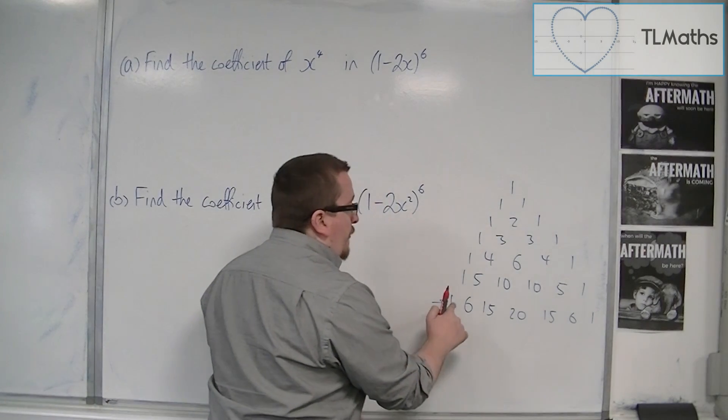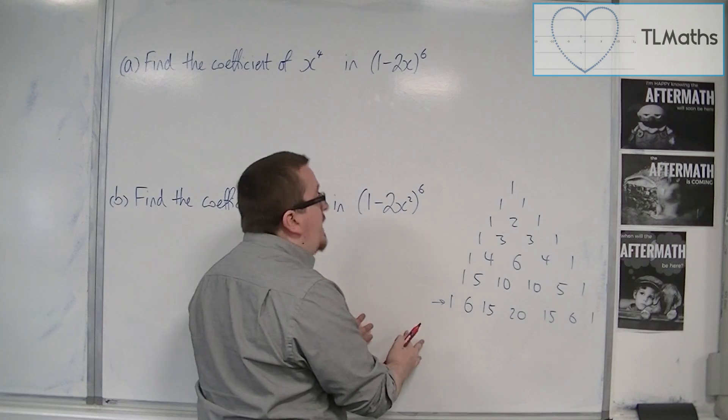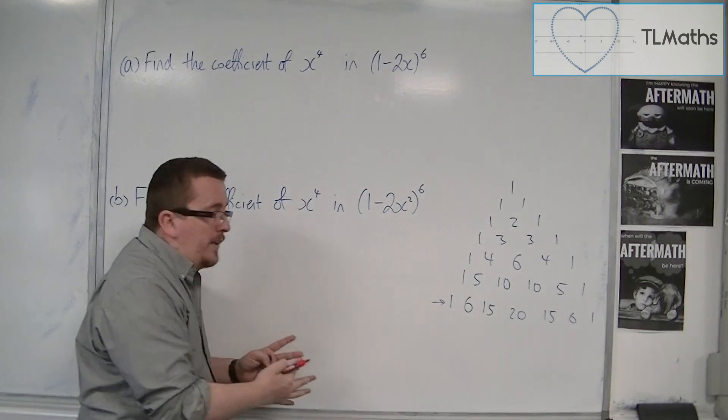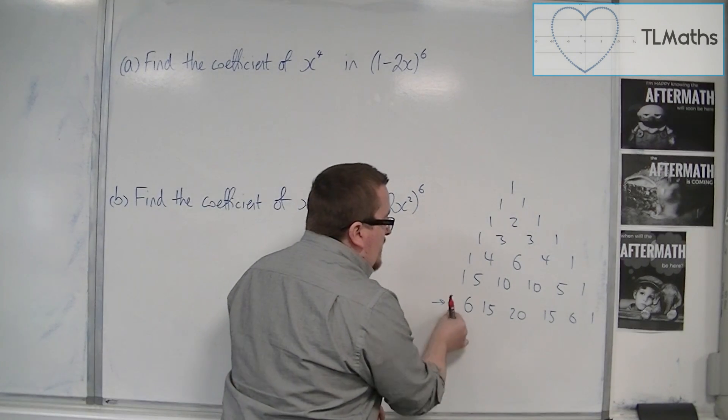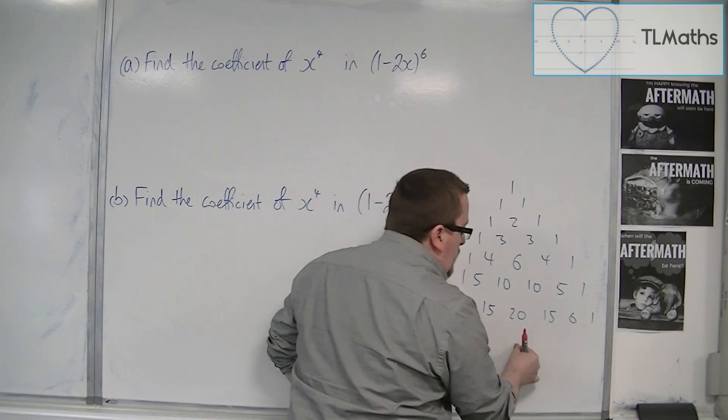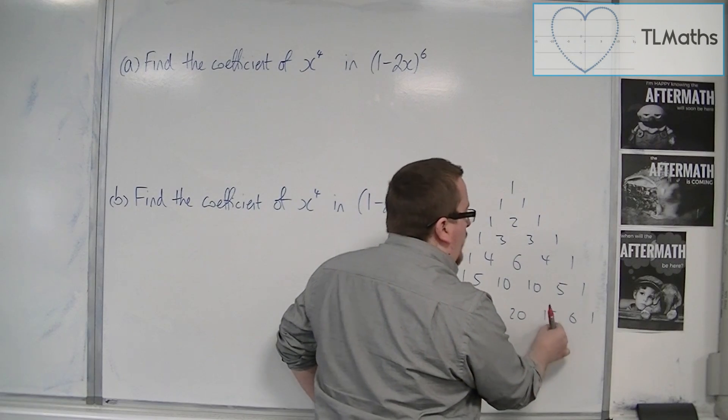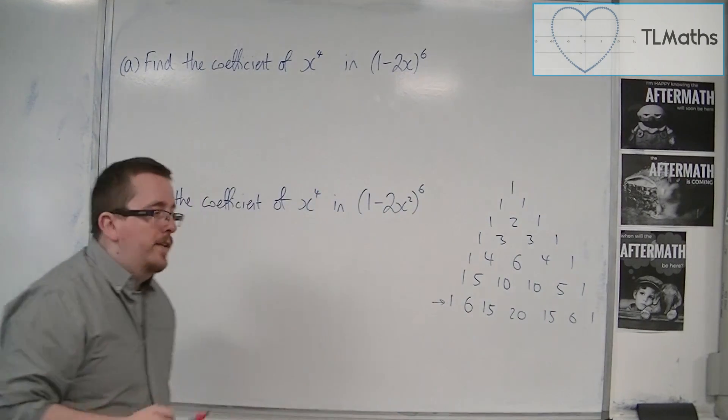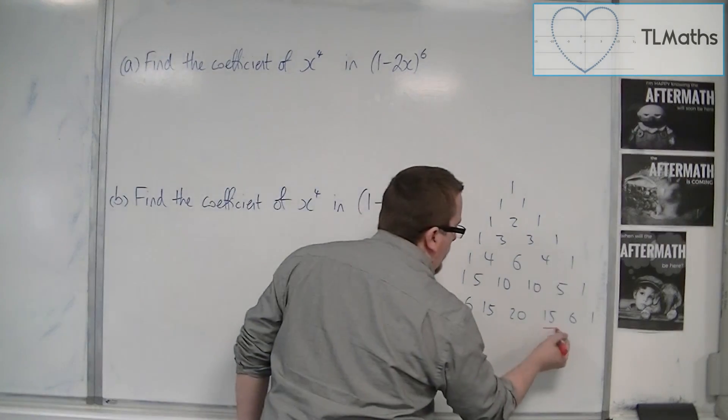Now I know that the first term doesn't have any x's in it because it would just be 1 to the 6th. So that's x to the 0 effectively. Then x to the 1, x squared, x cubed, x to the 4. So it would be that 15 that I want.